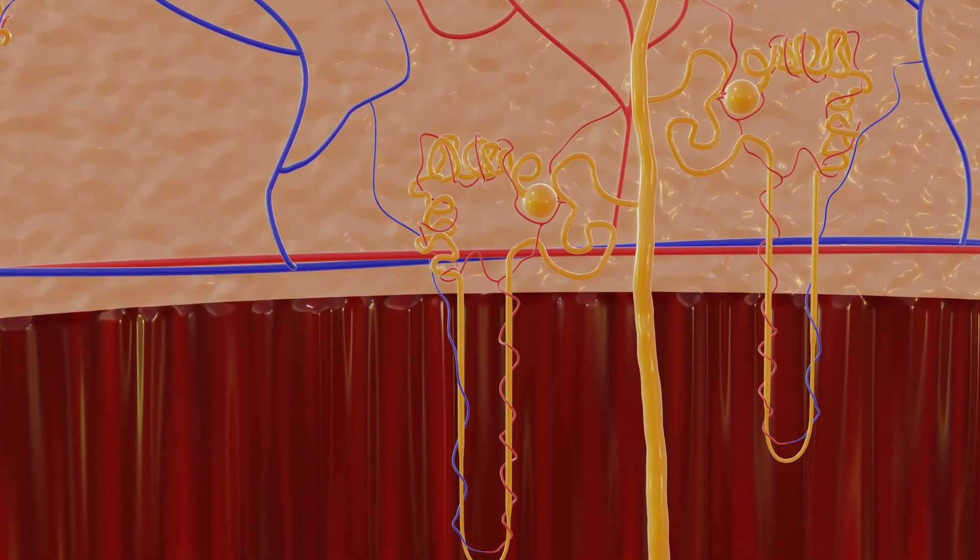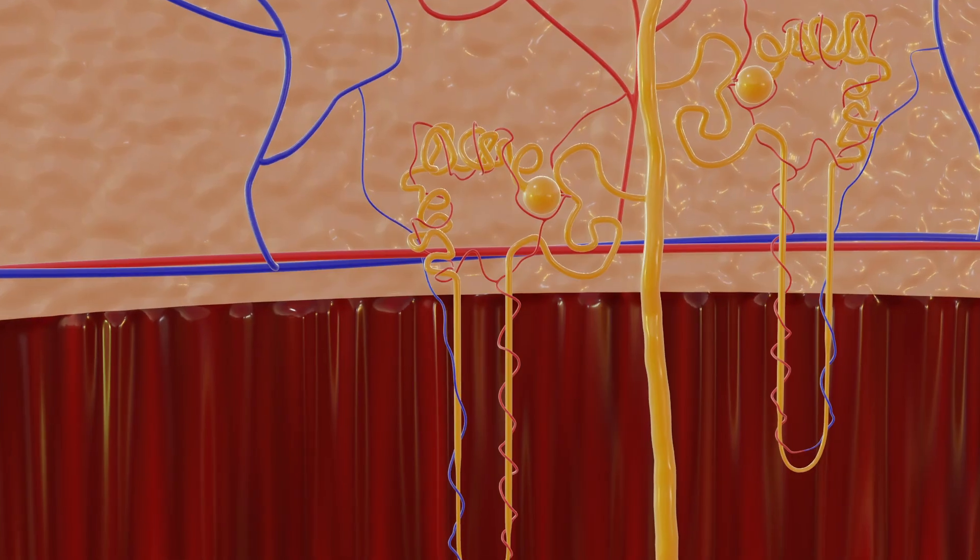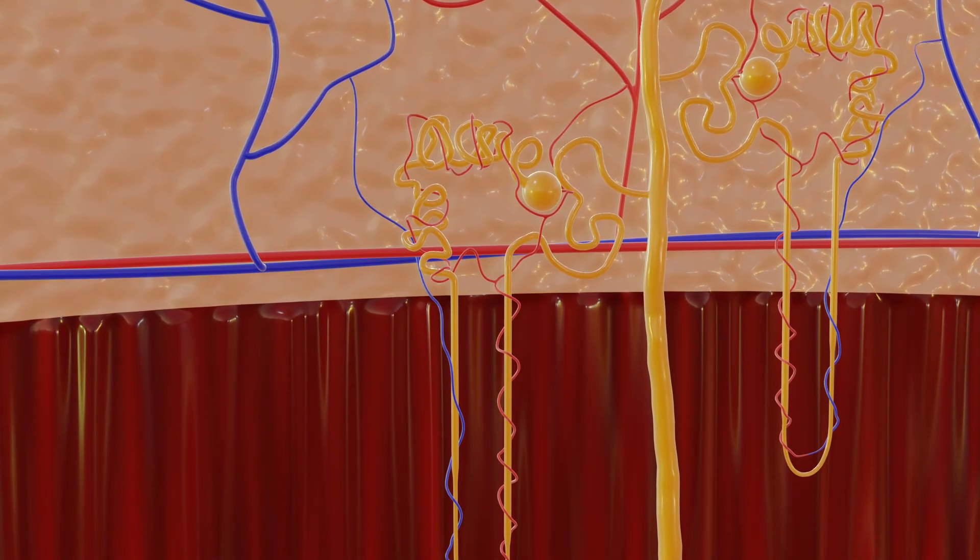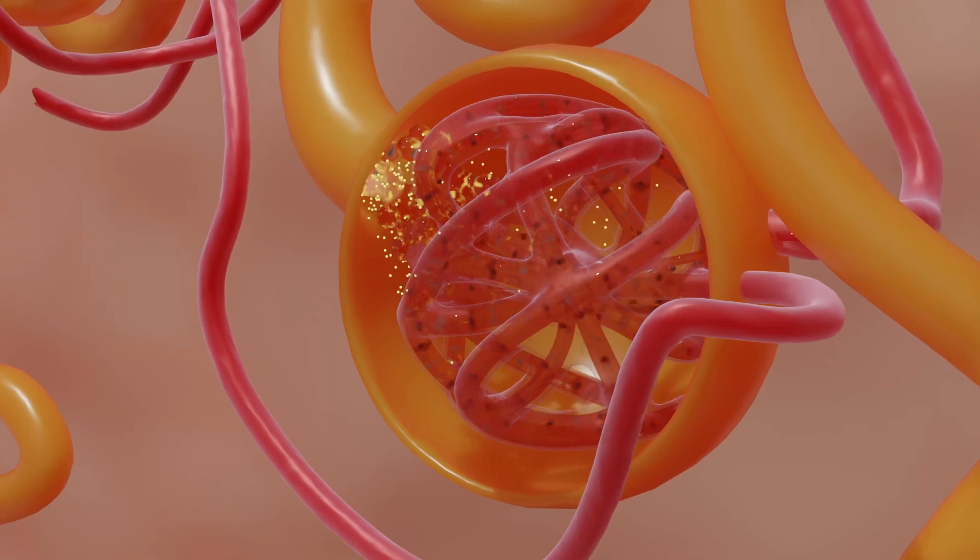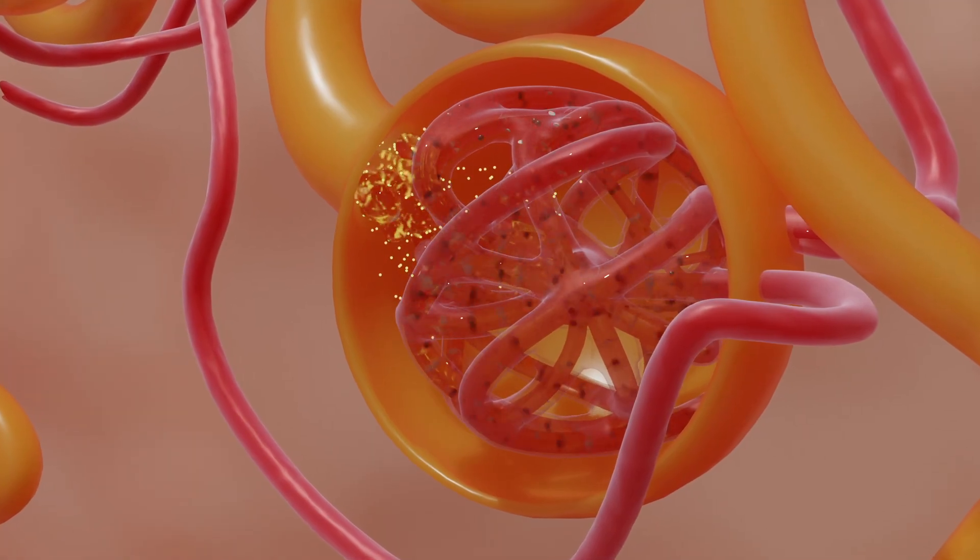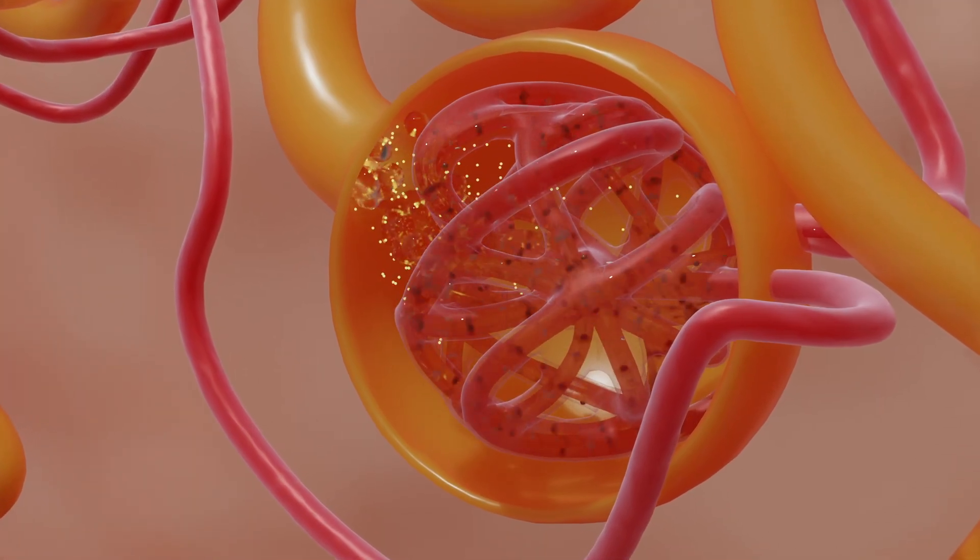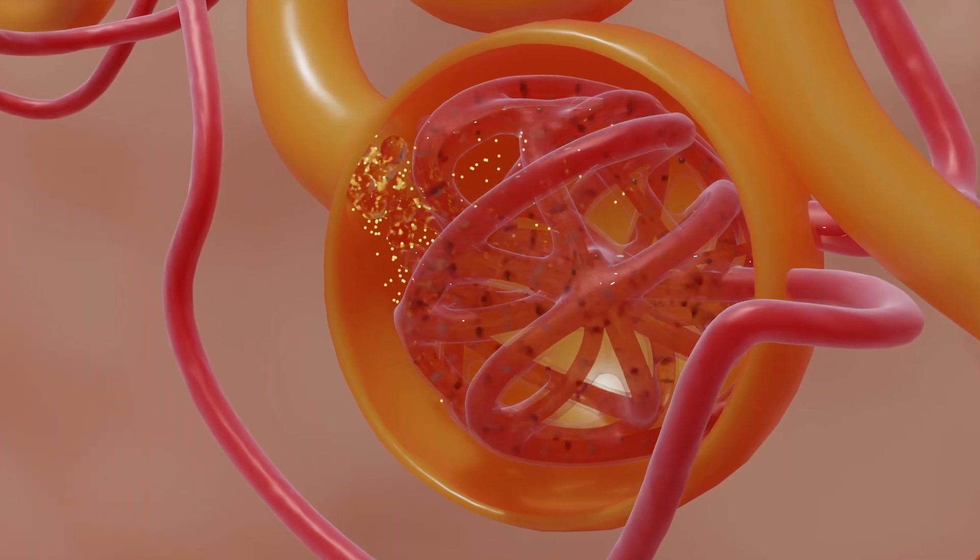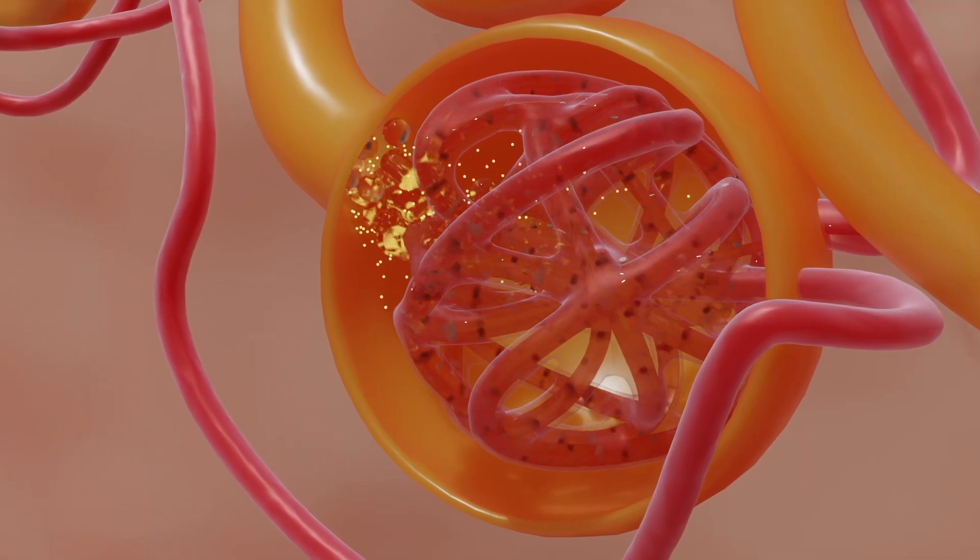The nephron consists of a capsule and a long tubule. There is a tiny blood vessel in the capsule. Water and molecules up to a certain size leave the blood vessel and form urine. This flows through the connecting tube system, with most of the water and electrolytes being reabsorbed by the body.